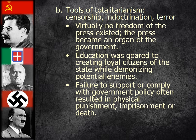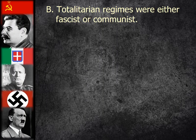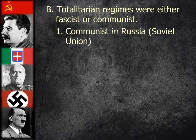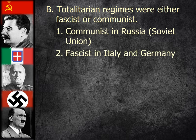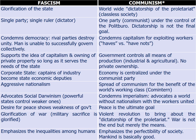Totalitarian regimes were either fascist — meaning right-wing — or communist, meaning left-wing. Communists were in Russia, or the Soviet Union; fascists were in Italy and Germany. There is a visual showing a compare and contrast of right-wing totalitarianism, fascism, and left-wing totalitarianism, communism, which we'll discuss more specifically in class.